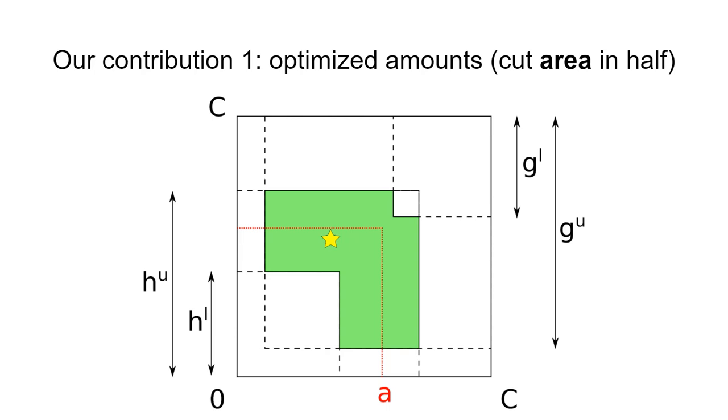And the intersection of these two figures, depicted here as colored in green, depicts the attacker's true knowledge. So all the points where, as per the attacker's knowledge, the true balance may be.